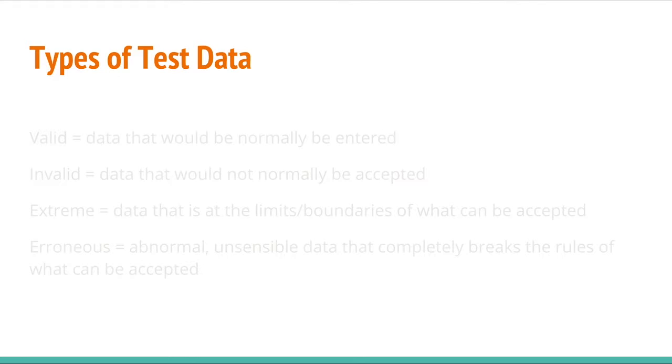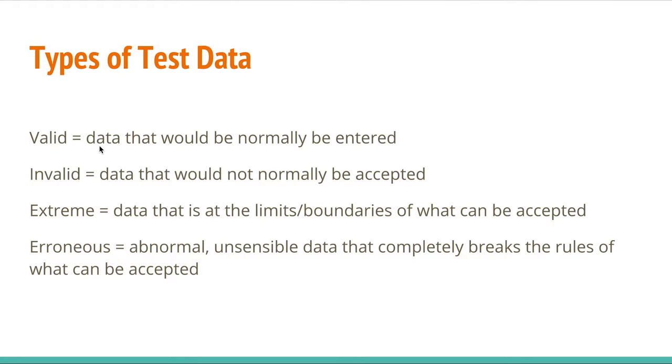Now, types of test data. We have valid data, which is data that would normally be entered and accepted. And invalid data is data that would not normally be accepted. And extreme data is data that is at the limit, the boundaries of what the program is able to accept. Erroneous data, like I said, is abnormal, unsensible data that completely breaks the rules of what can be accepted.